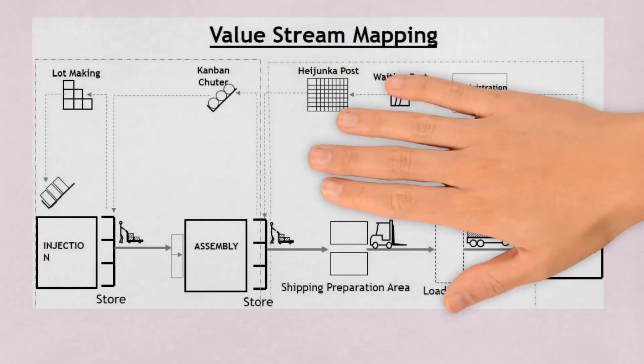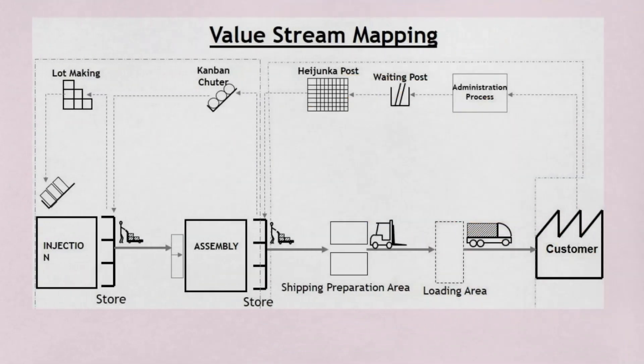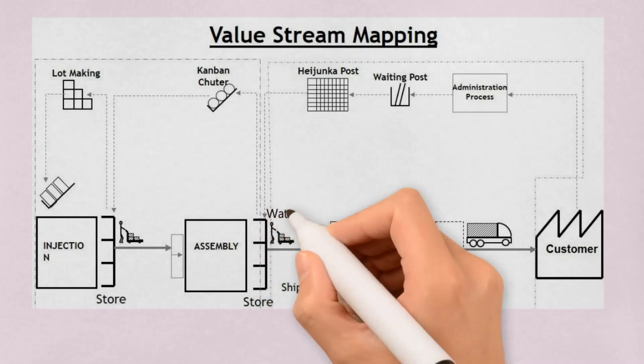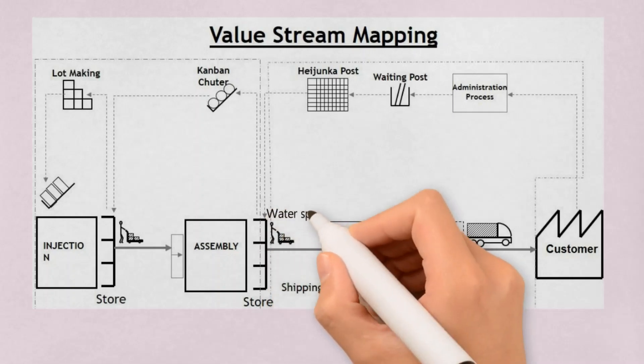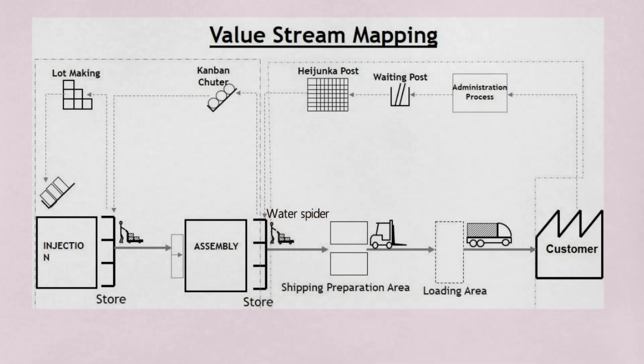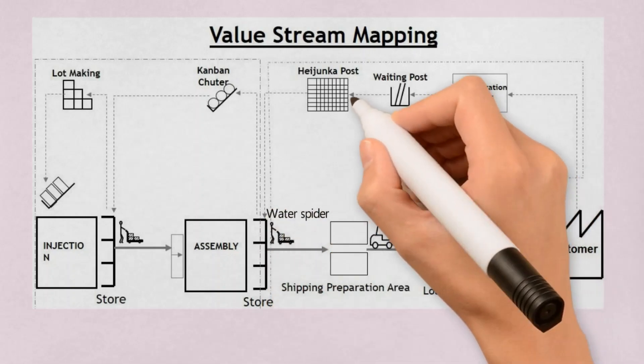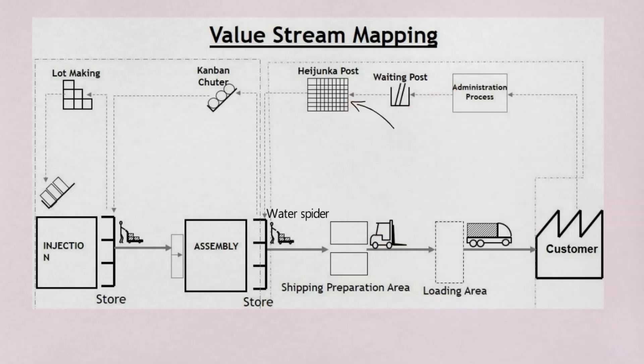This is a material and information flowchart, or in lean manufacturing it is called value stream mapping. There is a water spider who picks up kanban and takes material from the line store and puts it in the preparation area.